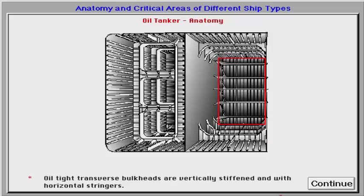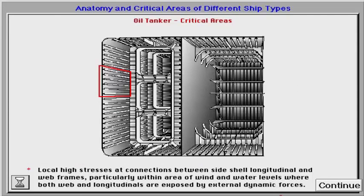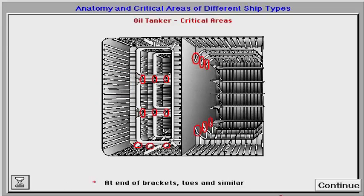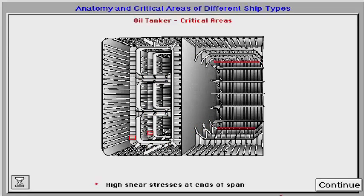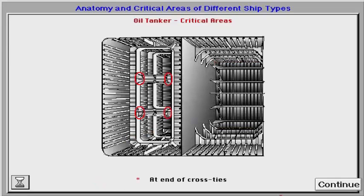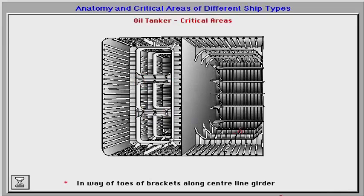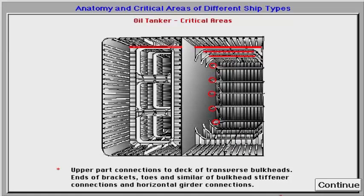The critical areas for oil tankers are as follows: at end of bracket toes and similar locations; high shear stresses at ends of span; at end of cross ties, in way of toes, and in way of bracket toes along the centreline girder; upper part connections to deck of transverse bulkheads; and in way of toes of girder connections.